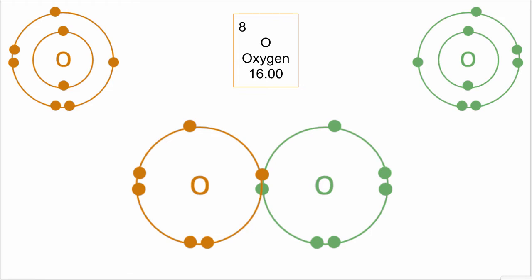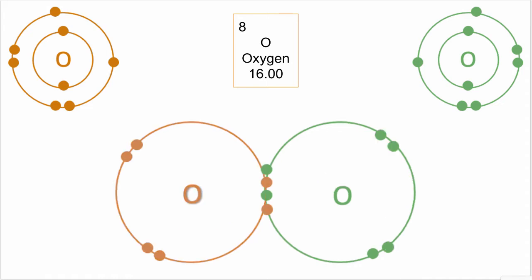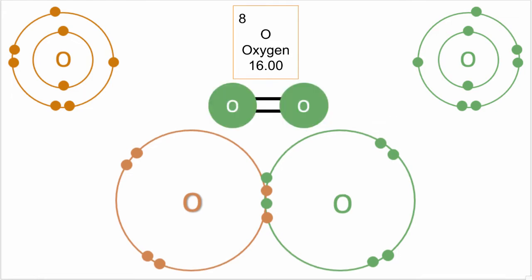So what needs to happen is that each oxygen atom needs to share two of its electrons and therefore form two covalent bonds. This is called a double covalent bond and this is represented by two solid lines.